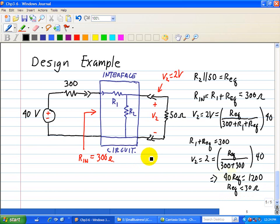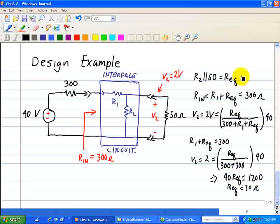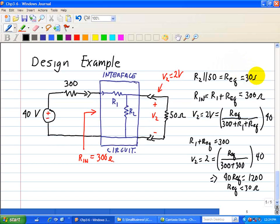Well we note that REQ is 30 ohms which consists of a parallel combination between R2 and 50. So REQ equals 30 and the parallel combination is just R2 times 50 all over R2 plus 50.